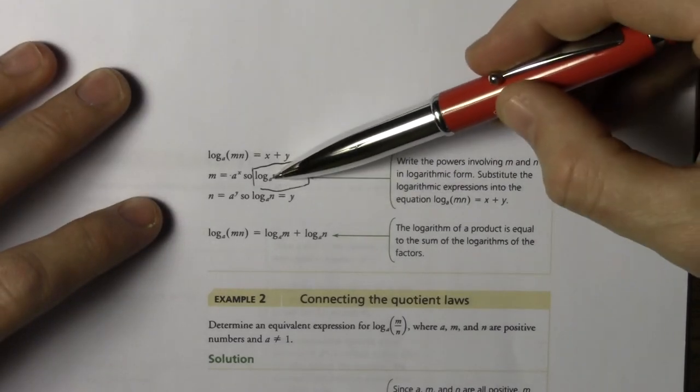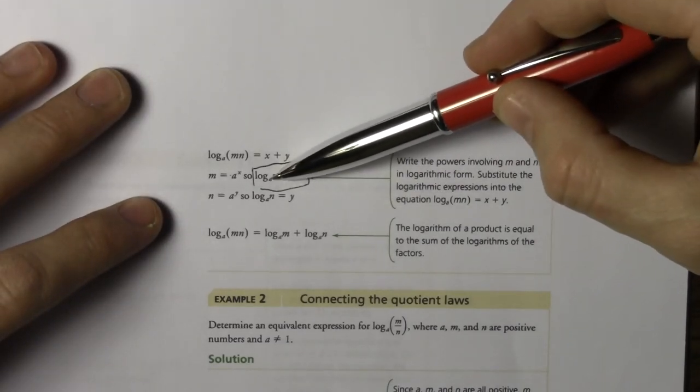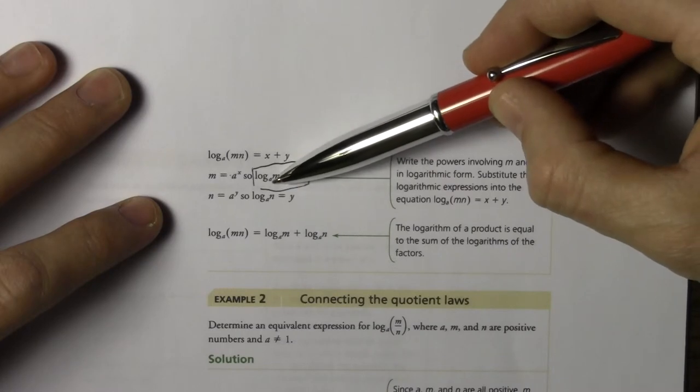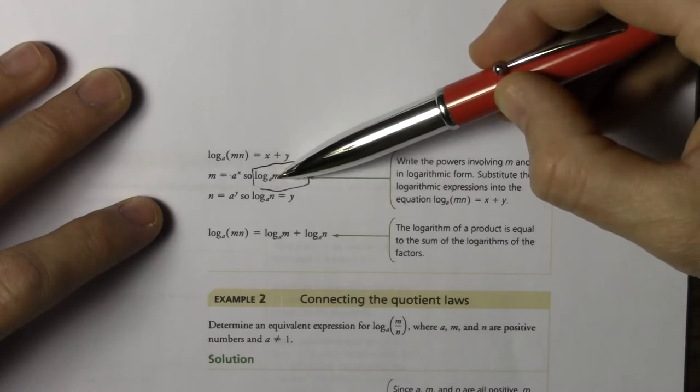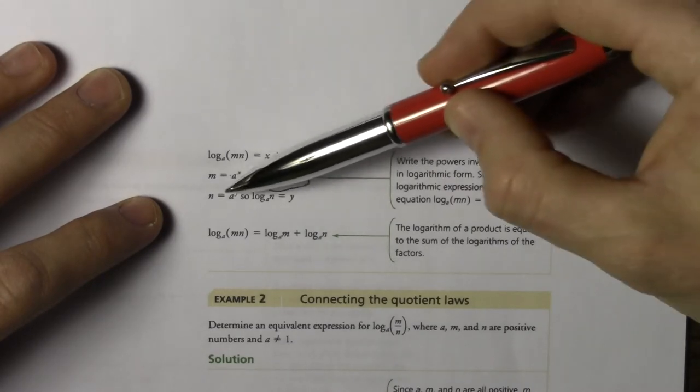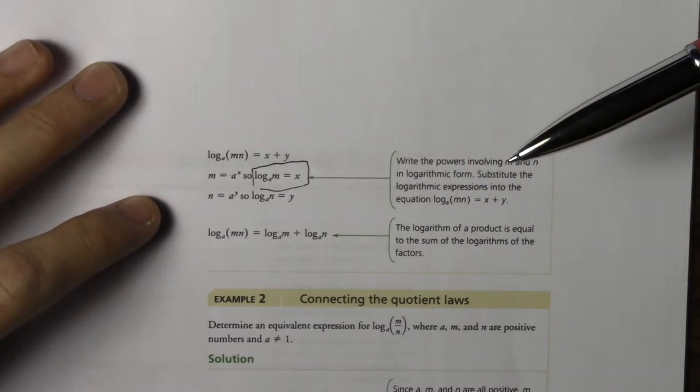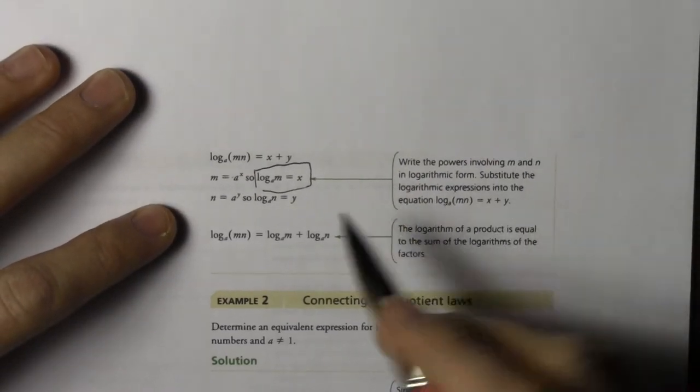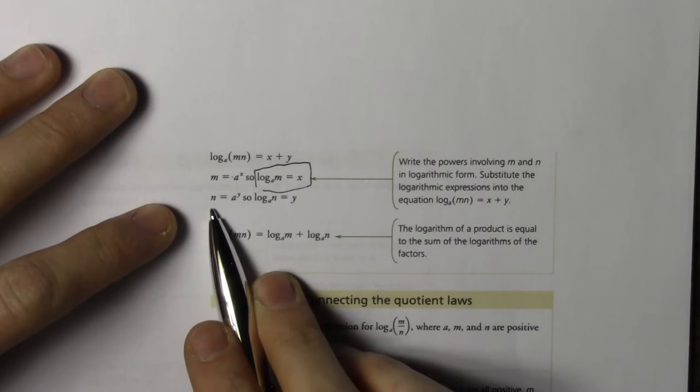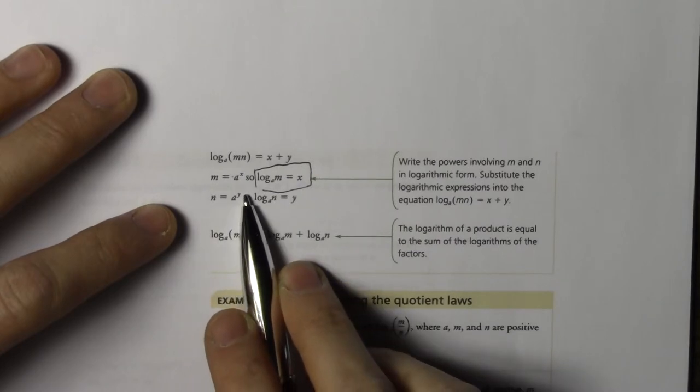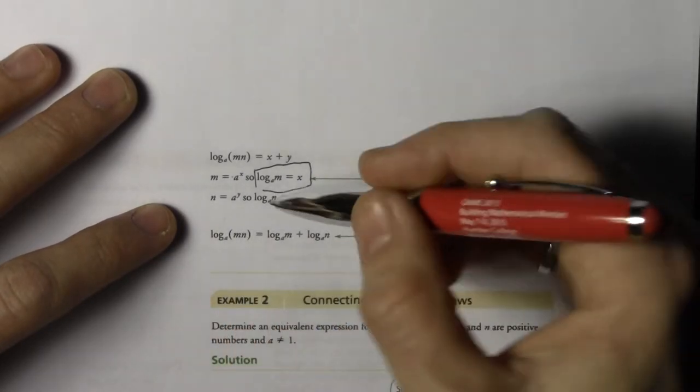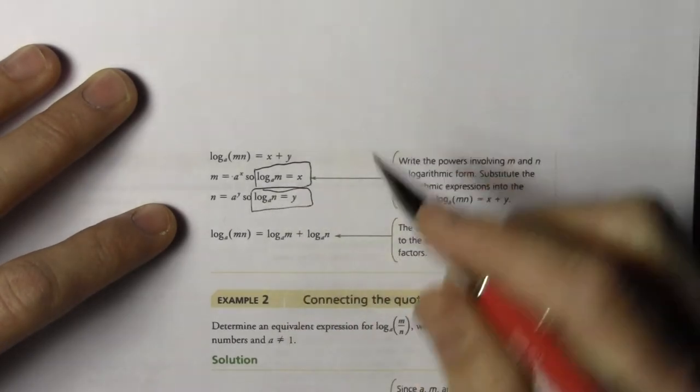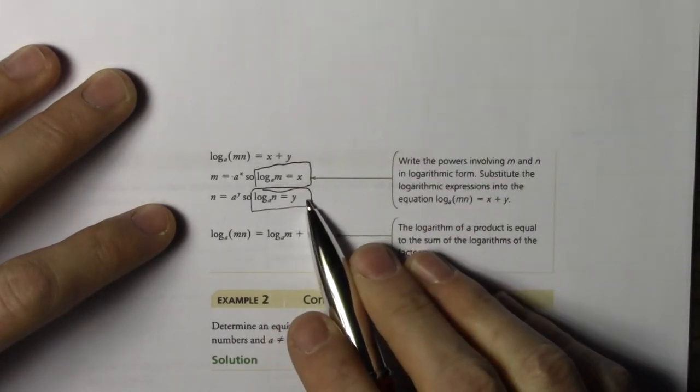Okay, everyone understands that? That's by definition, right? A needs to be raised, this value is the exponent that a needs to be raised to to get m. So a needs to be raised to x to equal m. Okay? Same thing goes for our n value. It's equal to a to the exponent of y, which we defined earlier. So therefore this statement is true. Log base a n is equal to y.